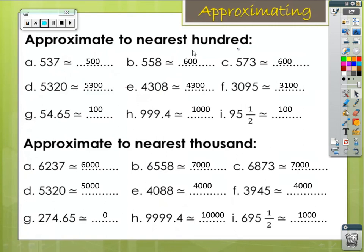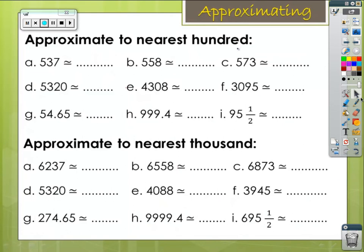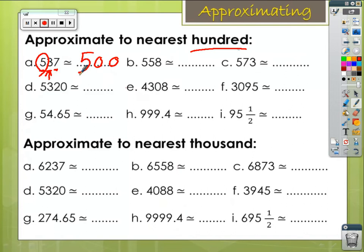Approximate to the nearest hundred. Our target digit is the 100s digit. We know: 7 is the units, 3 is the tens, 5 is the hundreds — so our target digit is 5. I'll make all the digits before it 0. The digit before it, 3 in the tens, is less than 5, so 5 will keep its value. Letter B: our target digit is 5; make all the digits before it 0; the tens digit is equal to 5, so increase the hundreds digit by 1 — it will be 6.